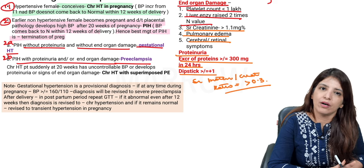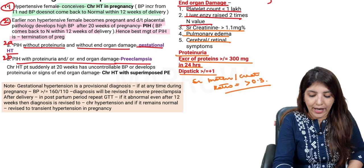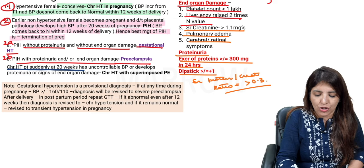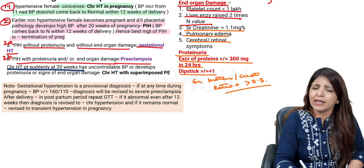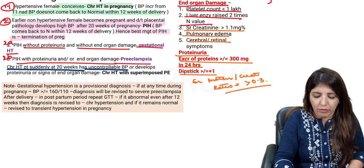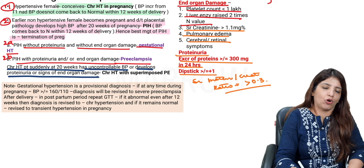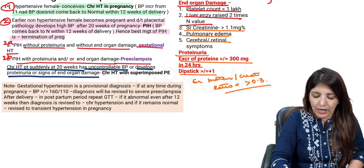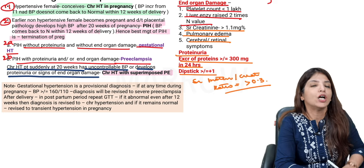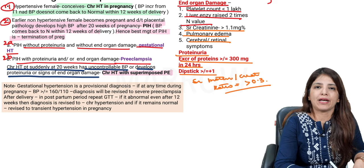There can be a case where a chronic hypertensive patient suddenly at 20 weeks of pregnancy develops uncontrollable BP, proteinuria, or signs of end organ damage — that is called chronic hypertension with superimposed preeclampsia.